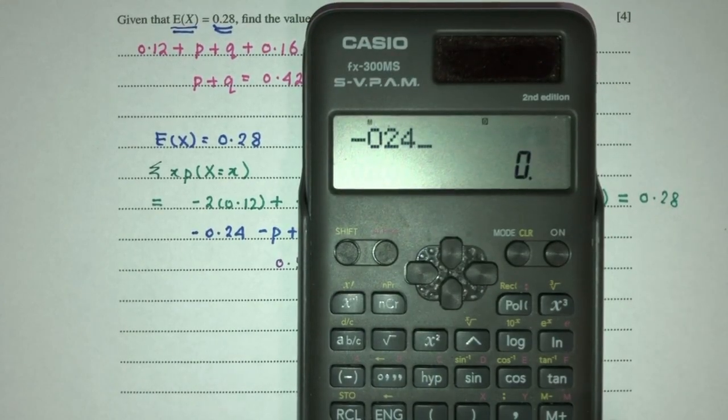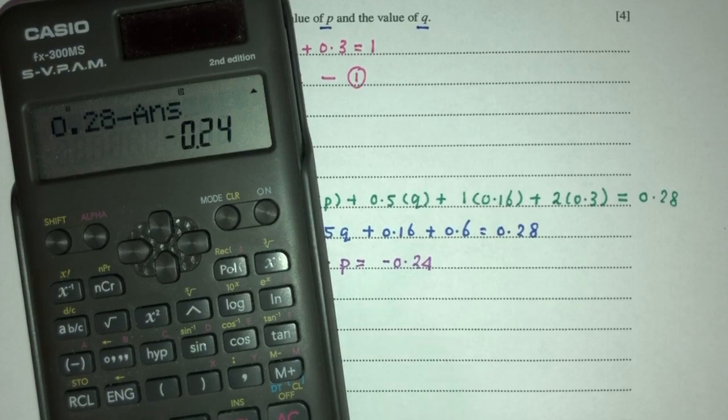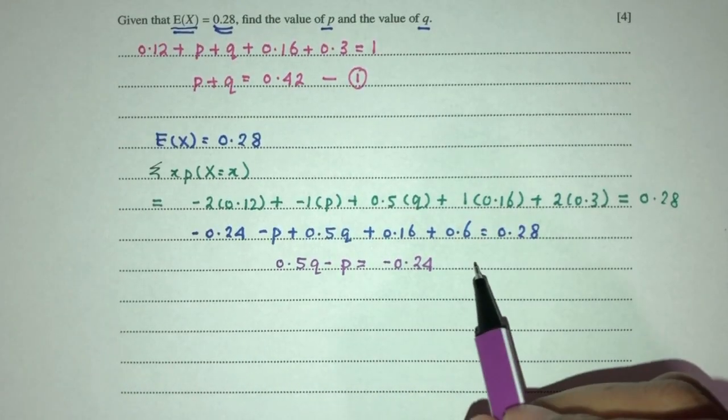I have minus 0.24 plus 0.16 plus 0.6. That will be this. 0.28 minus this should become minus 0.24. And this is my equation number two.